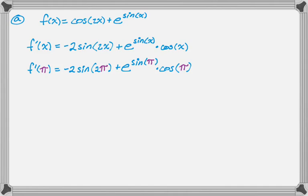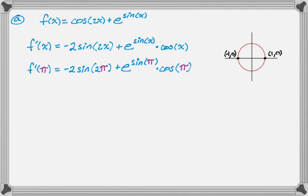You should have those memorized, but if not, you might just sketch the unit circle quickly. We need π and 2π. The point at 2π is (1, 0), and the point at π is (-1, 0). Points on the unit circle are (cosine, sine), so you can just use this to read off the values.